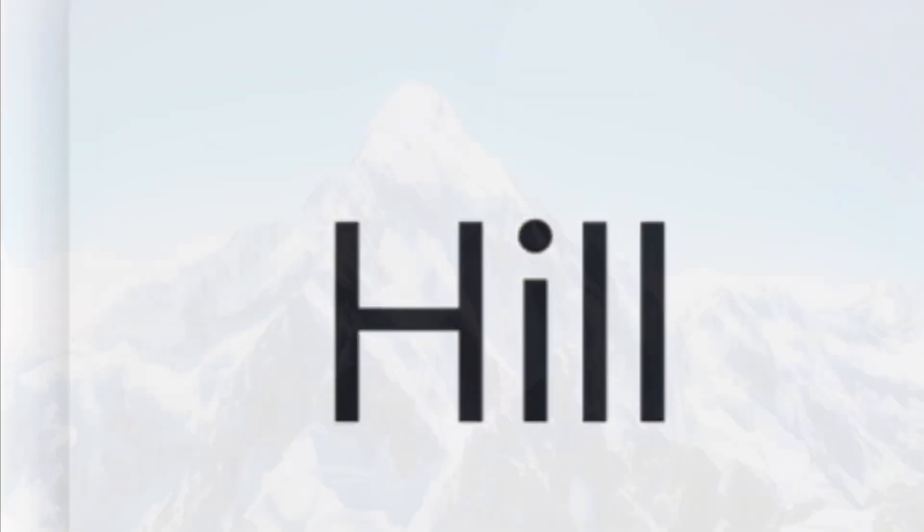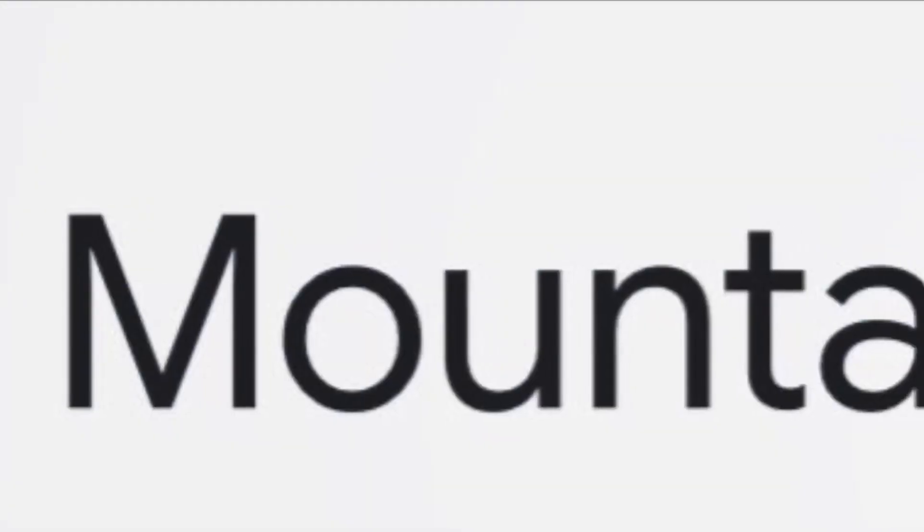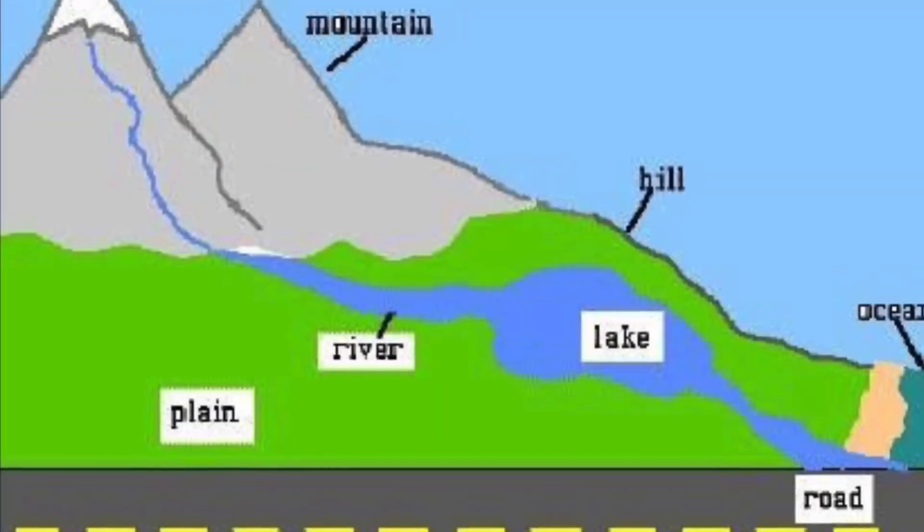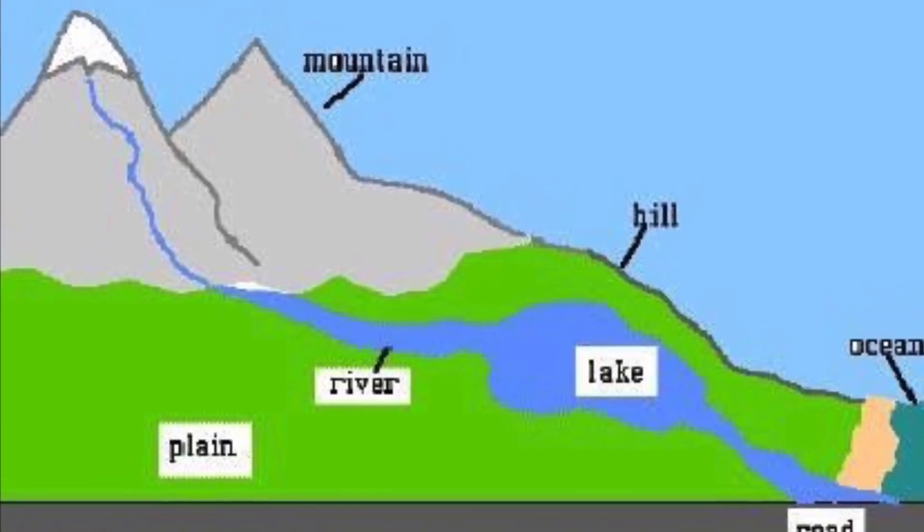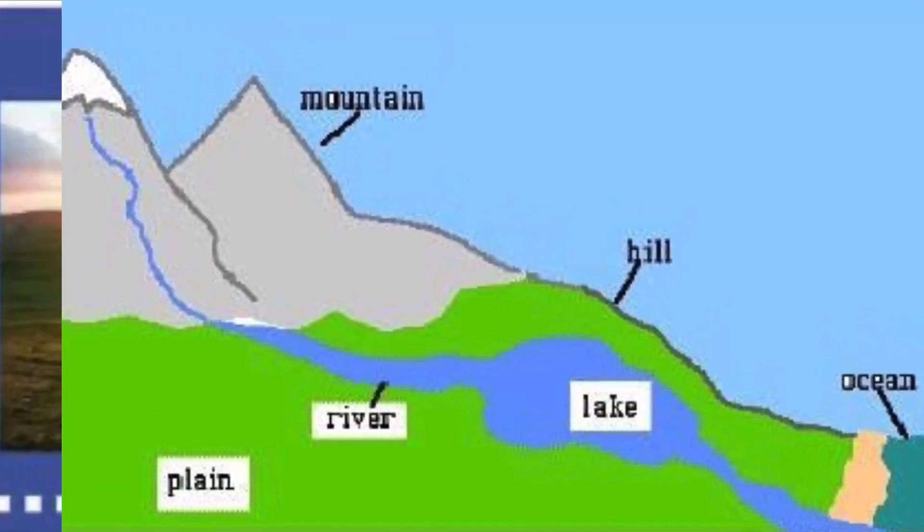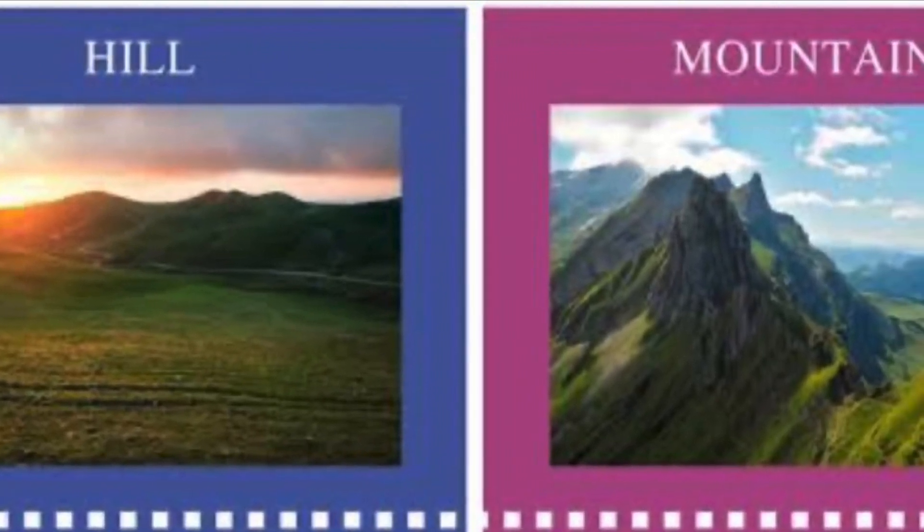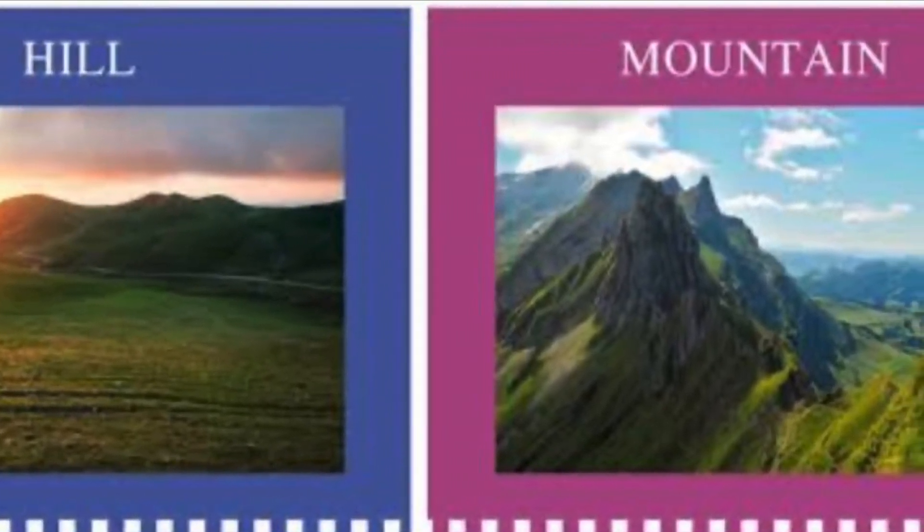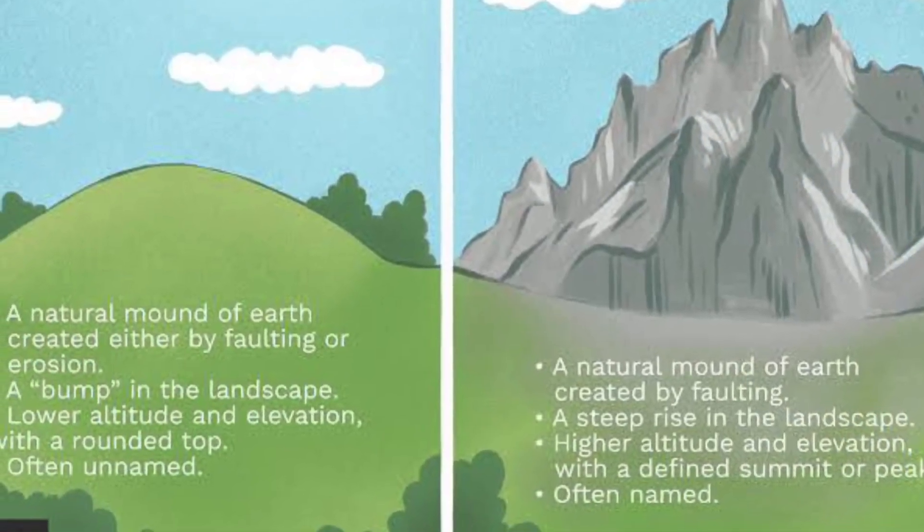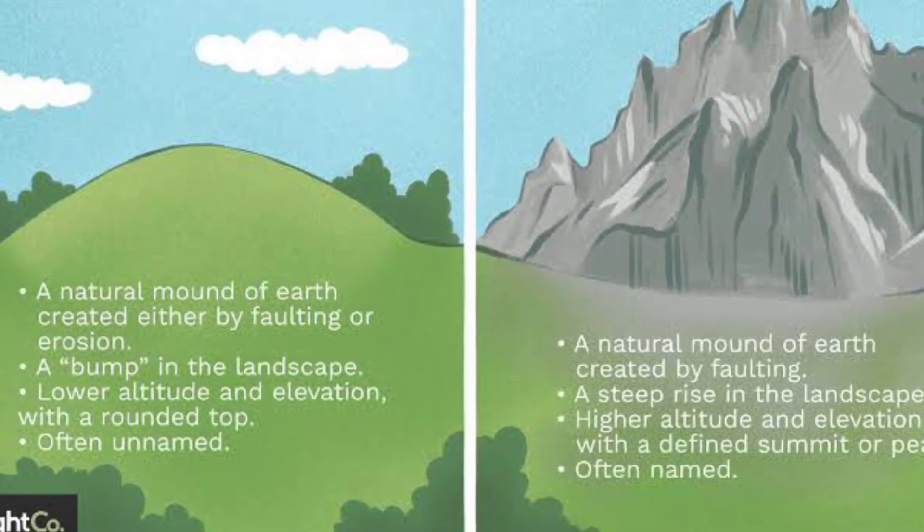Hills and mountains are both natural land formations that rise above the surrounding land. Mountains are typically taller than hills and have steep slopes and a well-defined peak, while hills tend to be rounded.